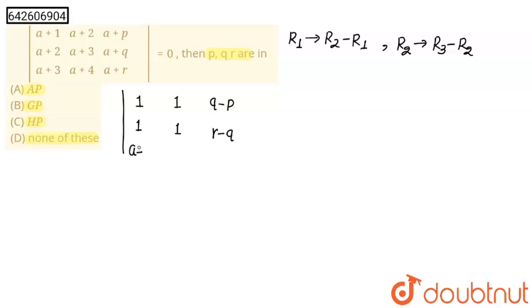a+3, a+3, a+4, and a+r. This determinant value is equals to 0.